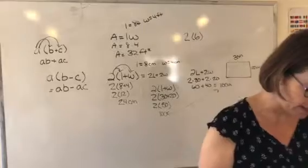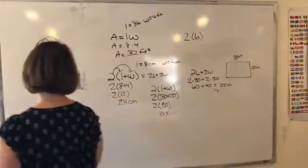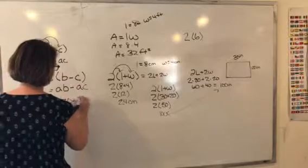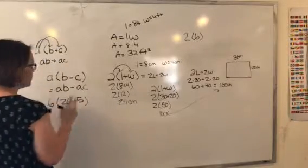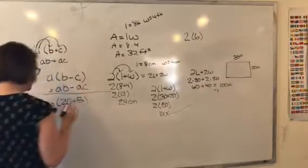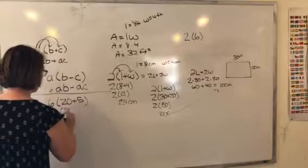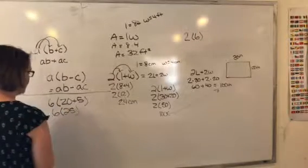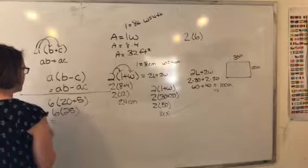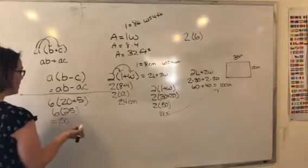Show two ways to simplify this expression. So 6 times 20 plus 5. So two ways I can get there. What's the first way I can get there? You can add the 20 and the 5. Okay. So 6 times 25 and that is 150. What's the other way I could get there? You can distribute the 6 between both. 6 times 20 is 120.